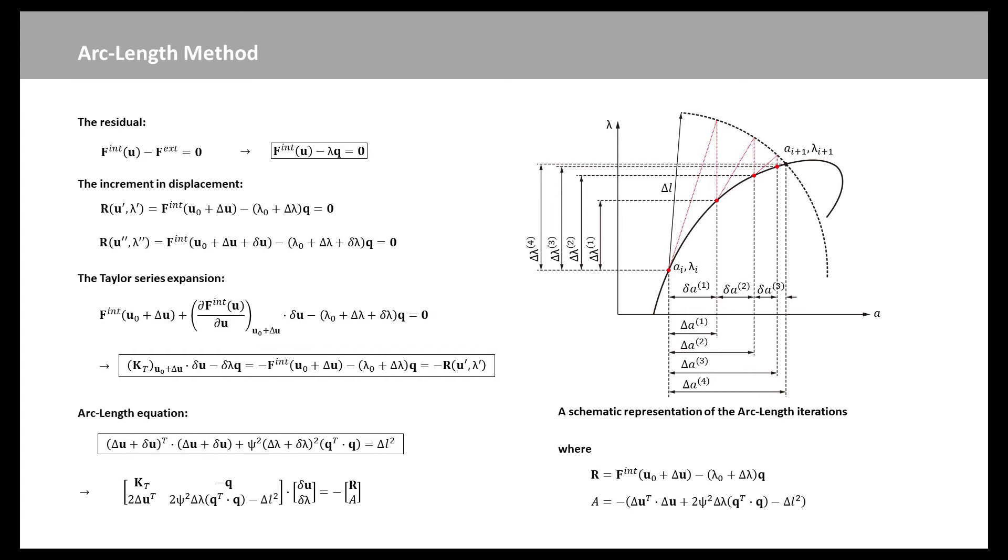Aiming that the new point u₀ plus big delta U plus small delta U and lambda₀ plus big delta lambda plus small delta lambda will satisfy the nonlinear equation. Using a Taylor series expansion and retaining only the linear terms, we can rewrite the last equation.